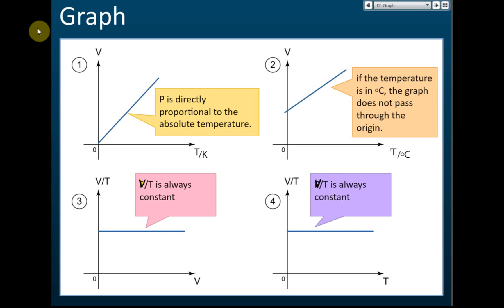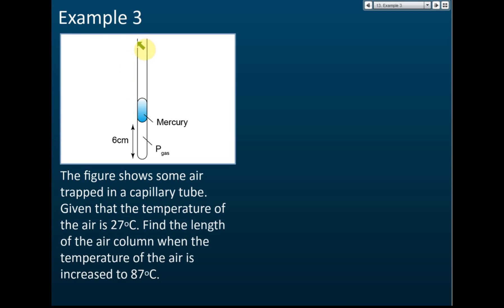Example 3: The figure shows some air trapped in a capillary tube. Given that the temperature of the air is 27 degrees Celsius, find the length of the air column when the temperature of the air is increased to 87 degrees Celsius.